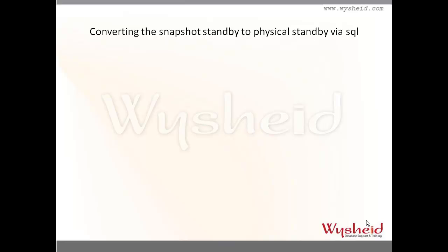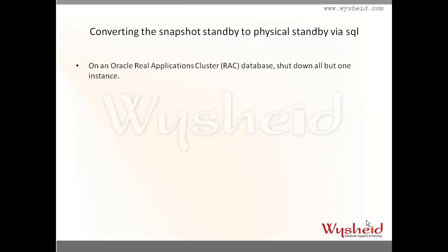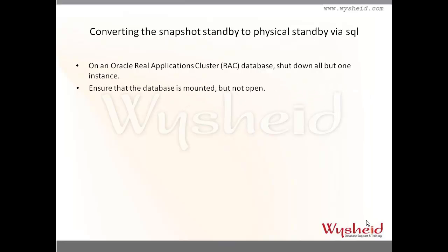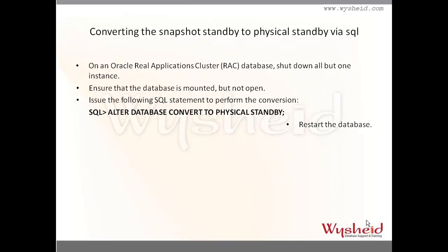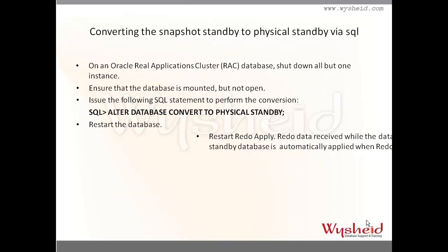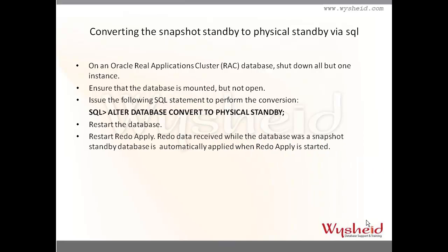To convert a snapshot standby database back to a physical standby using SQL commands: if using RAC, shut down all instances except one and ensure the database is in mount stage. Then issue the command: ALTER DATABASE CONVERT TO PHYSICAL STANDBY. Once conversion is successful, restart the database and then restart the media recovery process — that is, redo application.